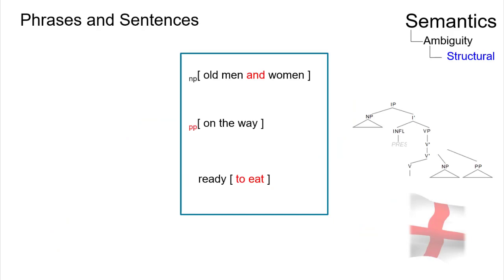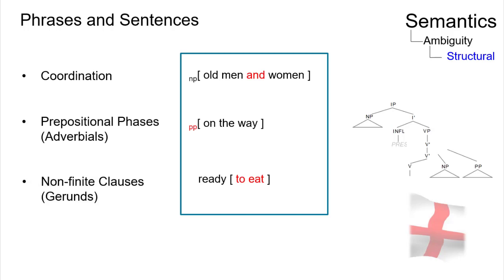In phrases and sentences, there are three central triggers for structural ambiguity in present-day English: coordination, prepositional phrases or more generally adverbials, and non-finite clauses.